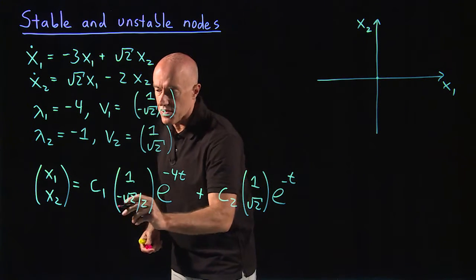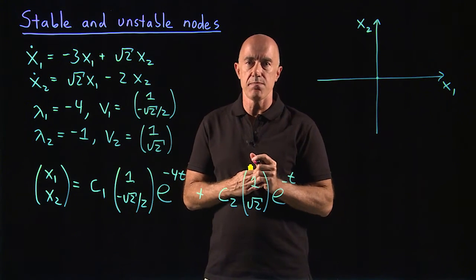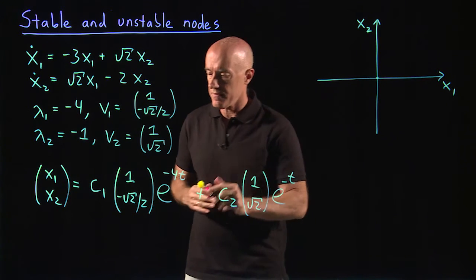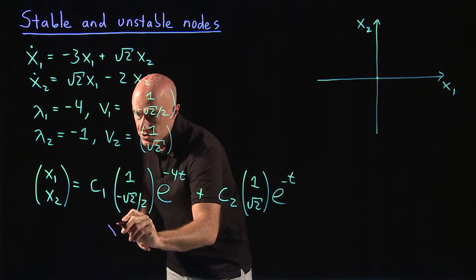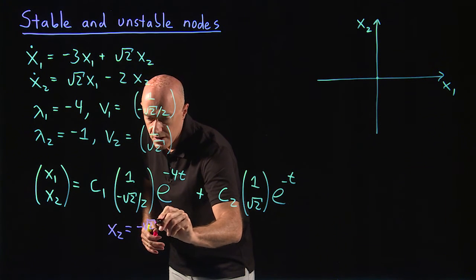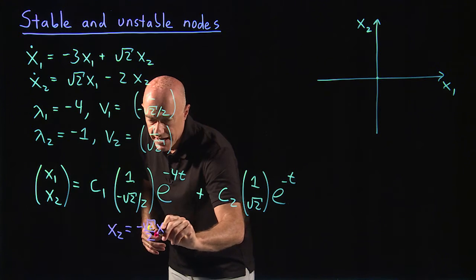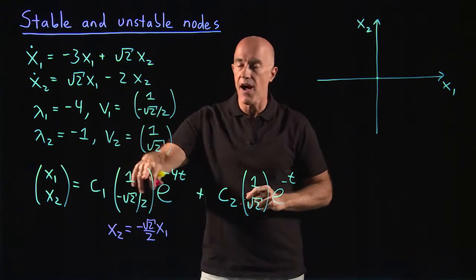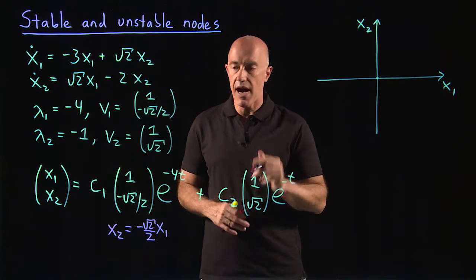So what that means is that there will be a fixed relationship between x2 and x1. Here, x2 is always going to be equal to minus root 2 over 2 times x1, because it's following the first eigenvector.